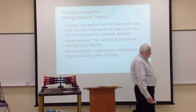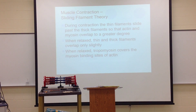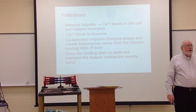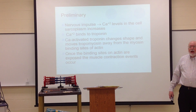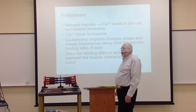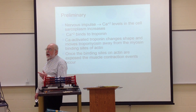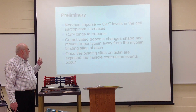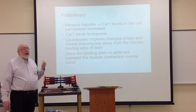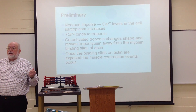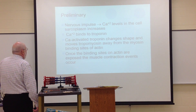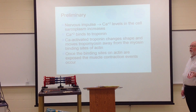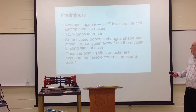Calcium floods into the sarcoplasm and binds to the troponin. That alters troponin's shape, and when you alter the shape of troponin, it pulls on that tropomyosin strand attached to it, pulling the tropomyosin off of the myosin binding sites on the actin molecules. Now those myosin binding sites are exposed, and myosin heads are able to come up and attach to the actin and start the process of pulling those thin filaments in toward the center of the sarcomere.